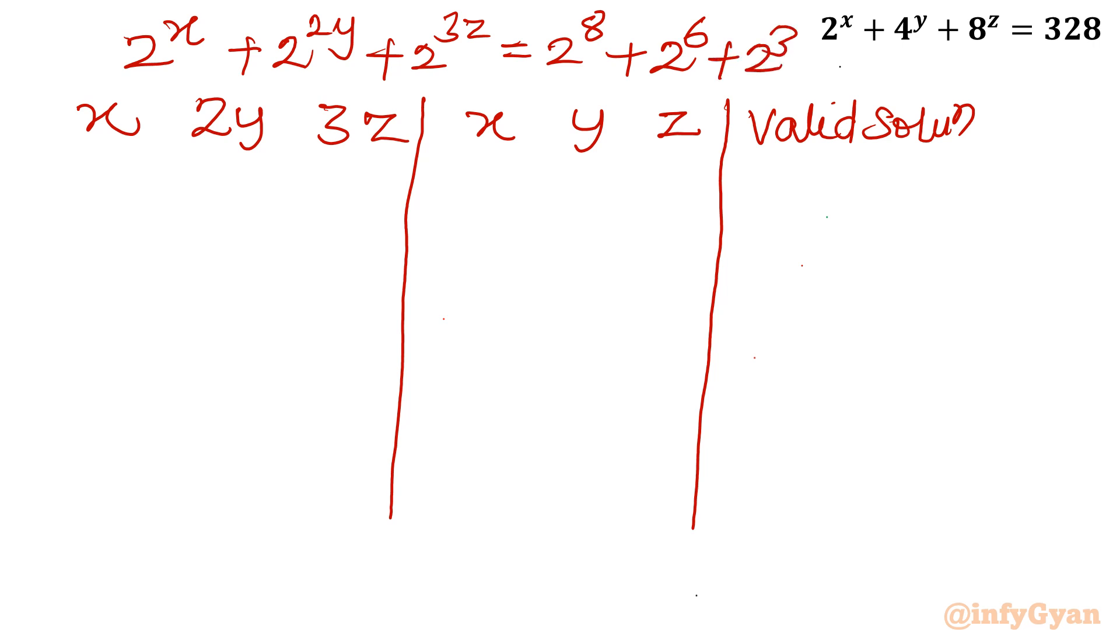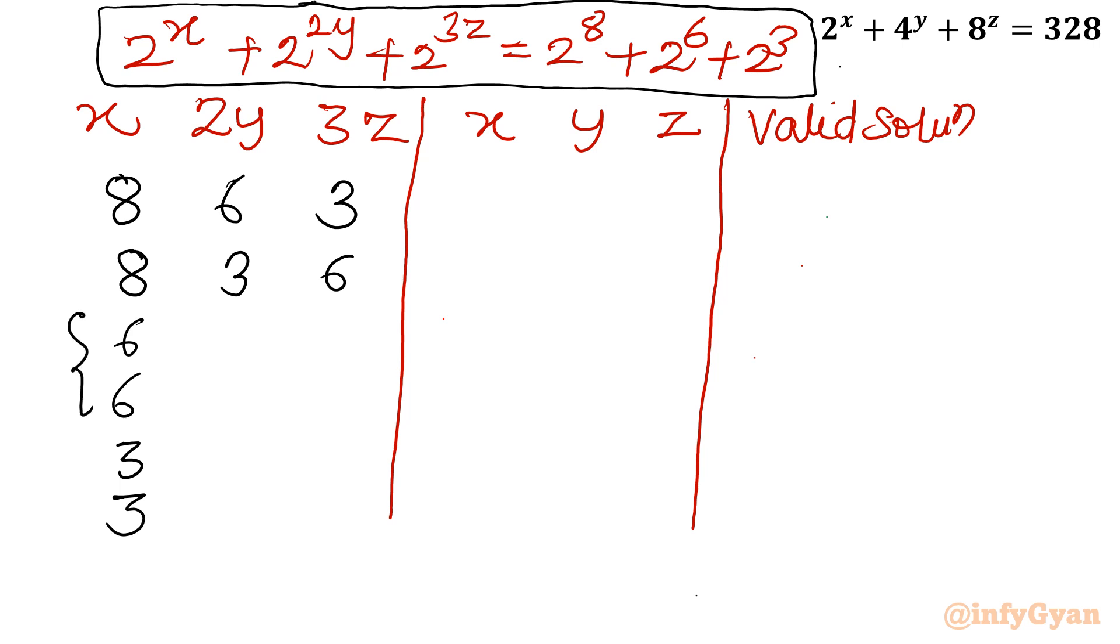Now I will write the value of powers. See, I have considered this equation, so I have to consider x, 2y, 3z as 8, 6, 3. Then I will write all the possible combinations of 3 numbers. So 8, 3, 6. Then we can freeze here 6 and 6. Then we will next time freeze here 3 and 3. So once you are freezing here 6 and 6, you can consider 3, 8; 8, 3. Once you are writing x as 3, then here you can write 6, 8; 8, 6.